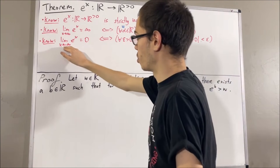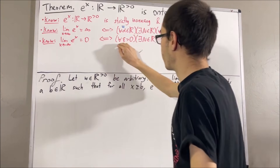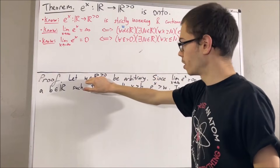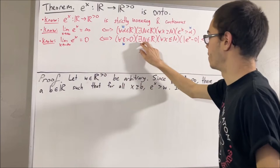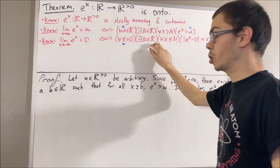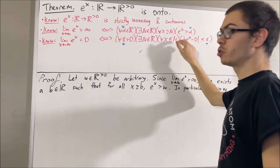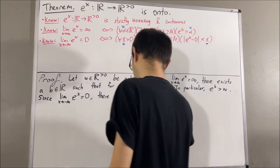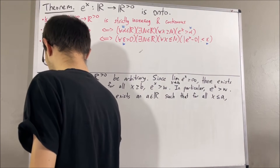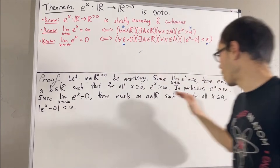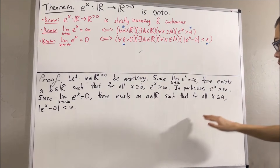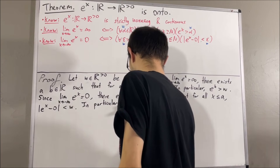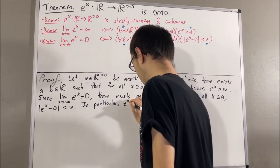Next, we also know that the limit as x approaches negative infinity of e^x equals 0, which means this statement is true for every positive real number. In particular, it must work for the positive real number w. So, taking ε to be w, there exists a real number I'll call a, such that for all x ≤ a, the absolute value of e^x − 0 is less than w. Taking x to be a, we have |e^a − 0| < w, which is just e^a < w.